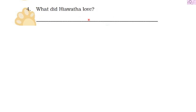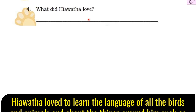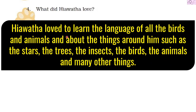Now let's move on to the fourth question: what did Hiawatha love? We know that Hiawatha loved all the beasts — meaning all the animals — and the birds. Hiawatha loved to learn the language of all the birds and animals, and about the things around him such as the stars, the trees, the insects, the birds, the animals, and many other things.